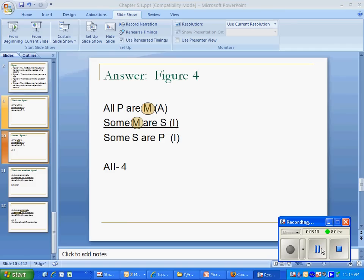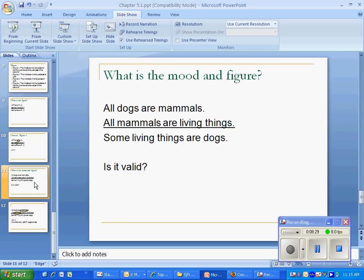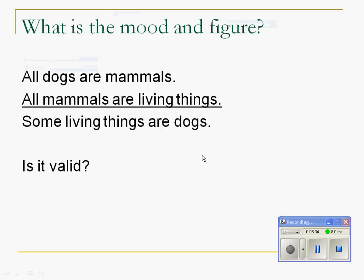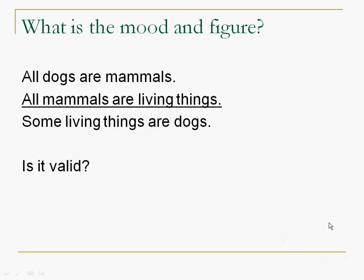I'm actually not going to say goodbye right now. I know, I faked you out. The tears were streaming down your cheeks because you were saying, you know, how can I go on? Actually, tears are streaming down my cheeks because I'm wondering how I can go on. Let's look at this slide for just a second. We've got all dogs are mammals. All mammals are living things. Some living things are dogs. And we're going to ask ourselves if it's valid.